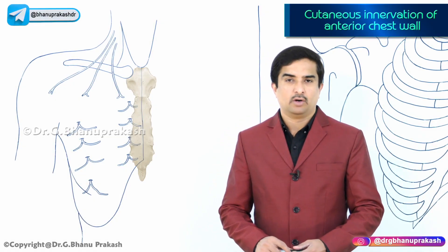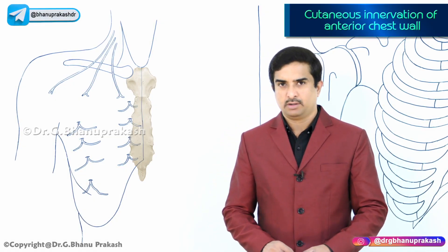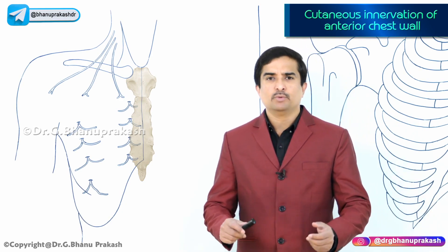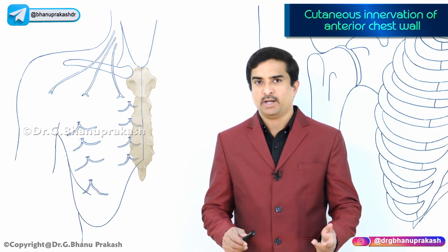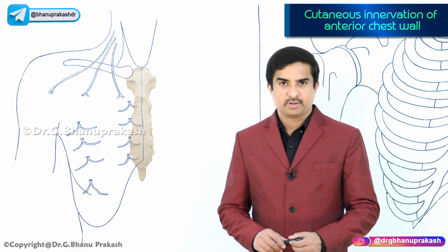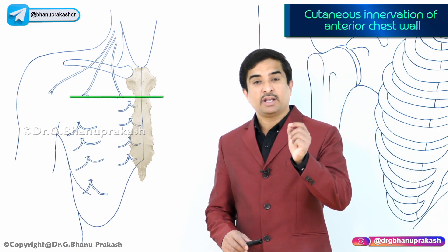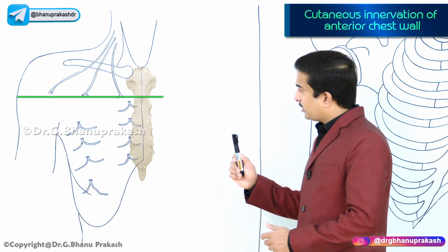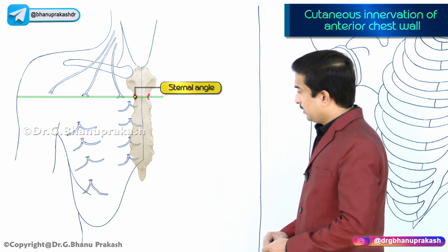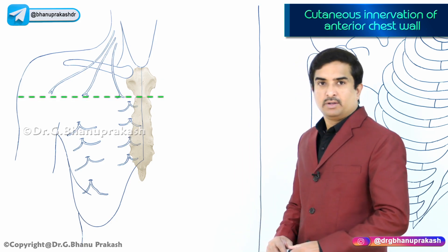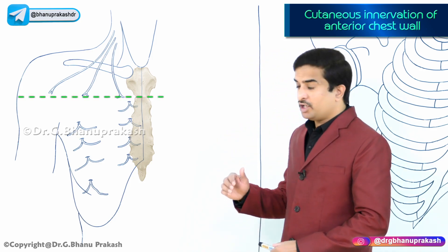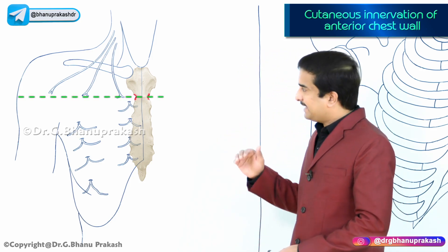The cutaneous innervation of the anterior chest wall, also called the anterior thoracic wall, involves numerous cutaneous nerves innervating the anterior aspect of the thorax. Before discussing these, we need to draw an imaginary horizontal line at the level of the sternal angle, which is also at the level of T2.